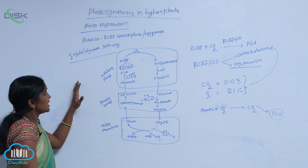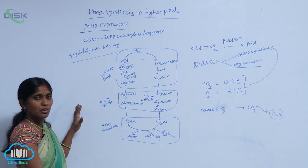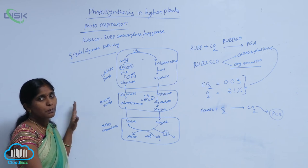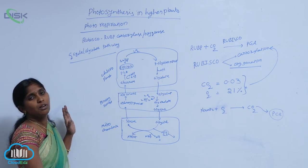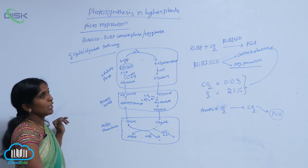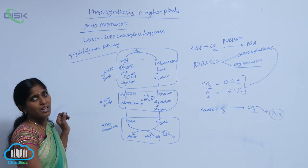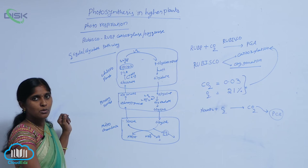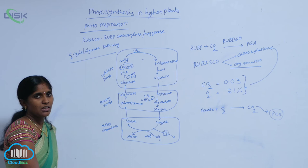Photorespiration is the coordination work of three organelles: chloroplasts, peroxisomes, and mitochondria. The first stable compound formed is glycolate. Glycolate consists of two carbon molecules; hence this cycle is also called the C2 cycle and also the glycolate pathway.